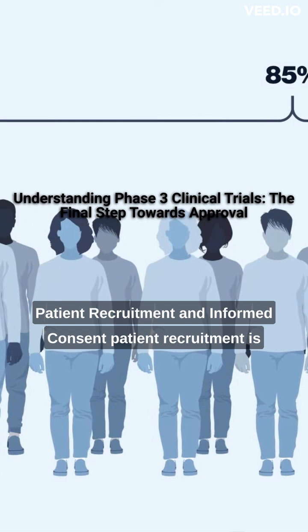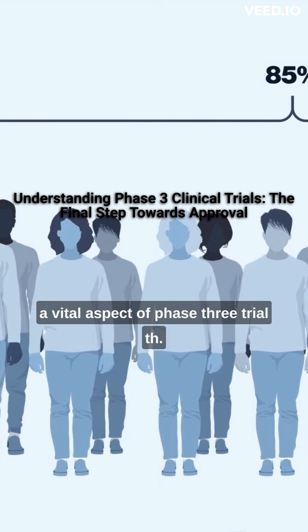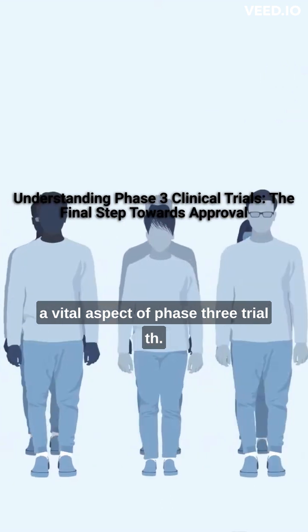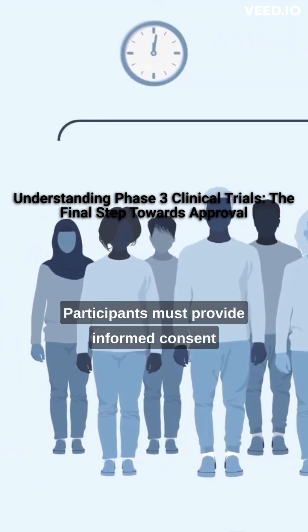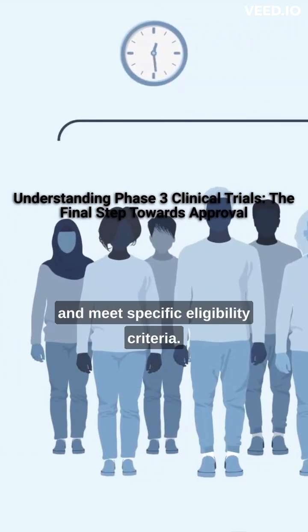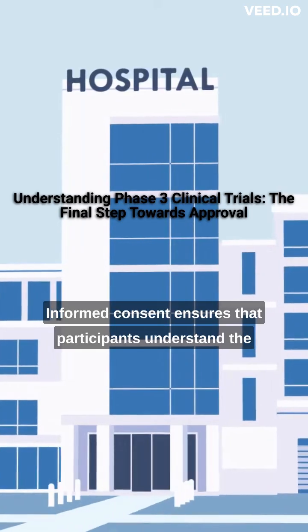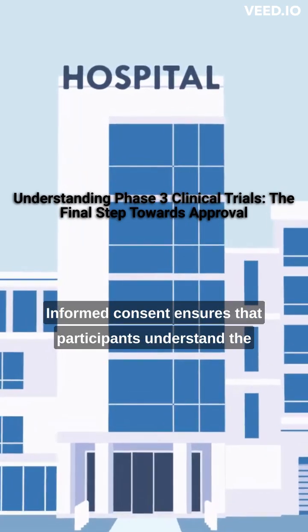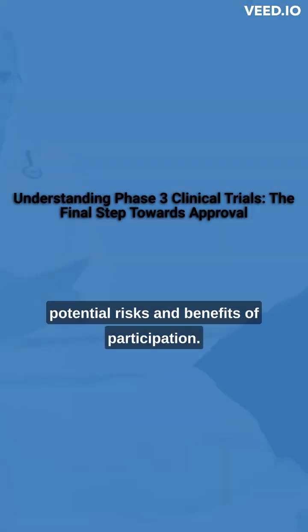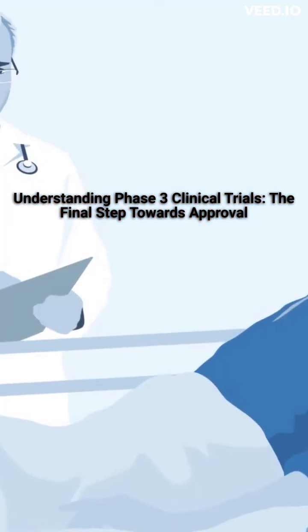Patient recruitment and informed consent: Patient recruitment is a vital aspect of Phase 3 trials. Participants must provide informed consent and meet specific eligibility criteria. Informed consent ensures that participants understand the potential risks and benefits of participation.